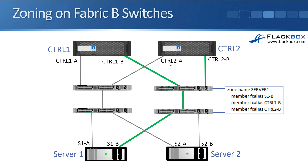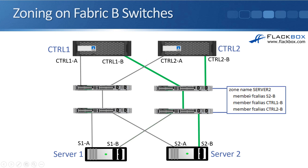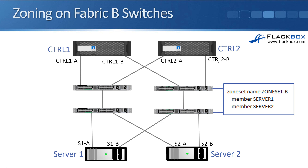On the Fabric B side, it's going to be similar. Server 1 can also get to its storage through the Fabric B path, so S1B is allowed to connect to Controller 1B and Controller 2B — that goes into a zone. Server 2 also gets a zone where S2B is allowed to connect to Controller 1B and Controller 2B. Finally, both zones are put into a zone set for Fabric B, completing the zoning configuration.